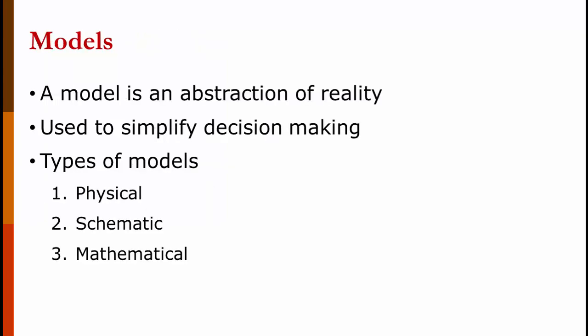A model can be defined as an abstraction of reality. We use models to simplify decision making. There are three broad categories of models: physical, this could include a model of a plant with machinery that you can move around to figure out the placement; schematics, these are basically drawings or blueprints; and mathematical models like queuing theory, material requirements planning, and inventory models.